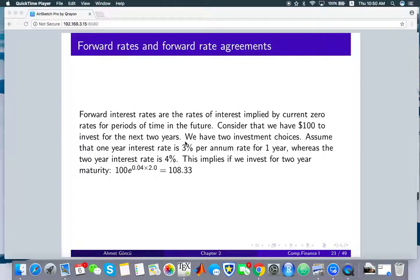Consider that we have $100 to invest for the next two years. And here you can think of two investment choices. Suppose that we can either invest for one year maturity and then we can reinvest it for one more year. And in the second alternative, we can directly invest for two years from the interest rate, which is given for the two year maturity as 4%.